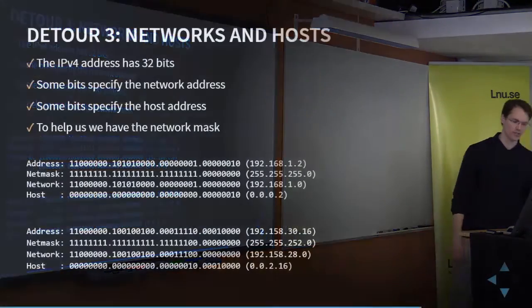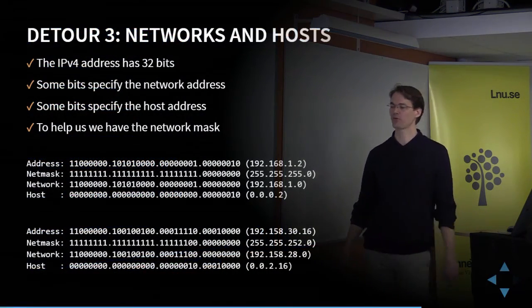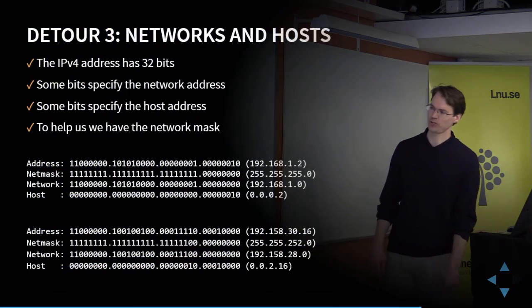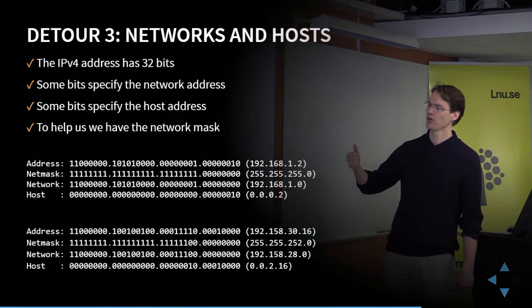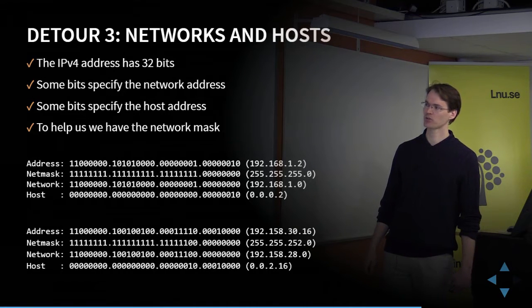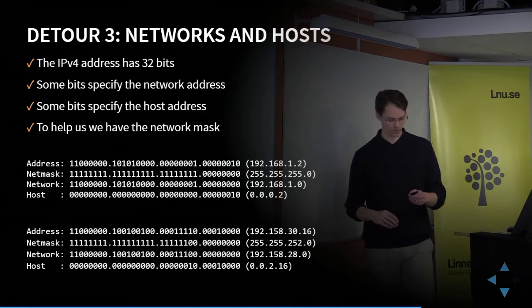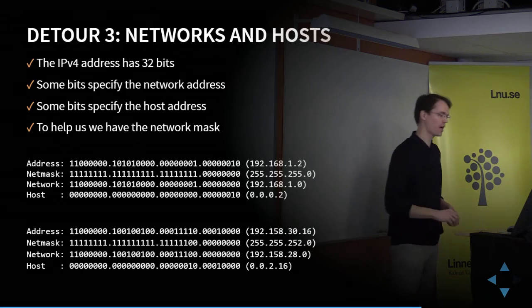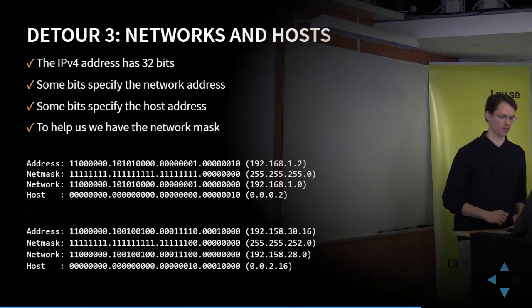This is what routers do to figure out where to deliver a message: they compare the destination address to known addresses in their routing tables along with the associated network masks, then determine where to forward the message.